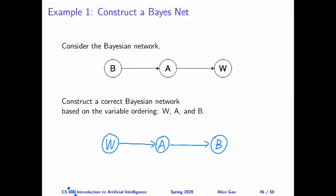And then we're asked to construct another correct Bayesian network while adding the variables into the network in reverse order. So the correct answer here is that the network is still a causal chain. But let's look at how I derived this answer.